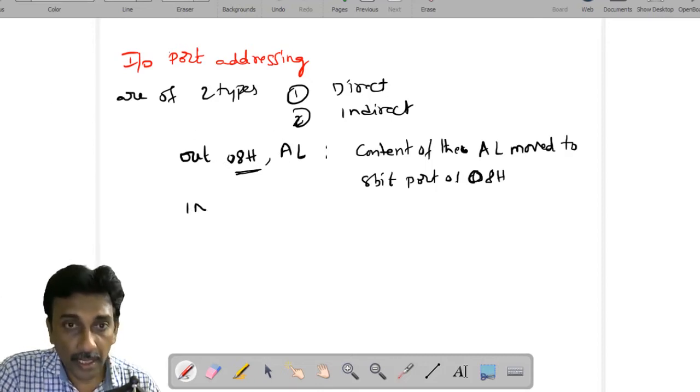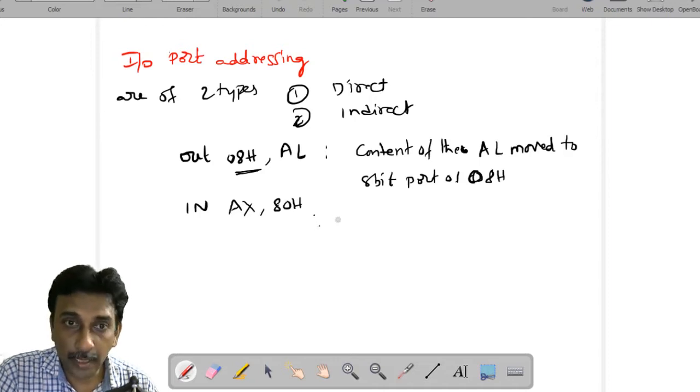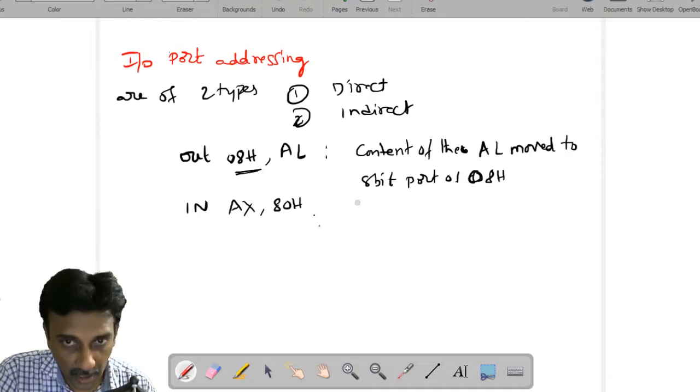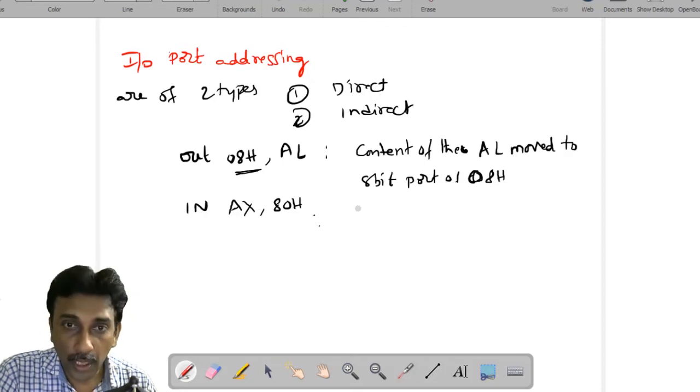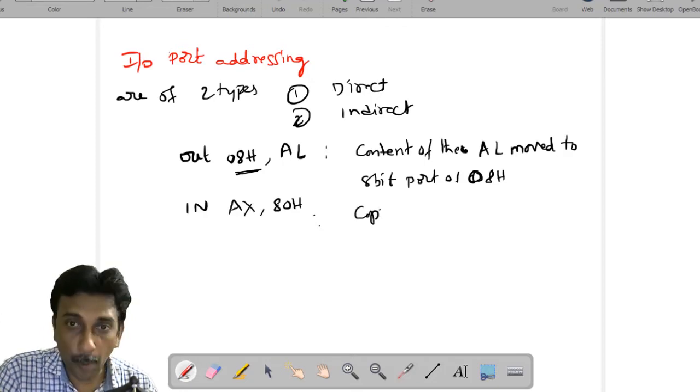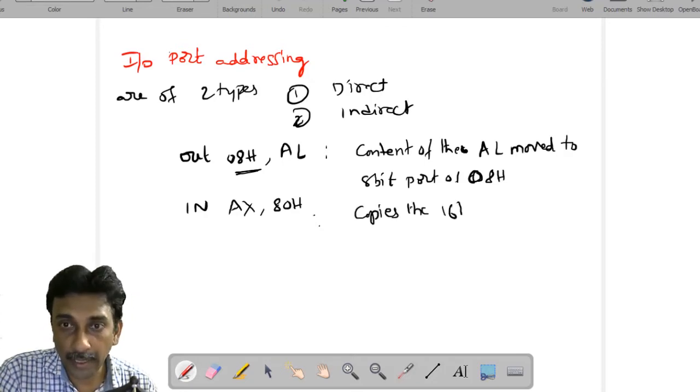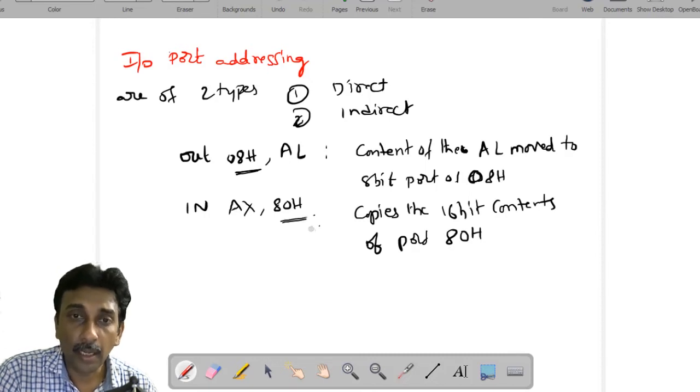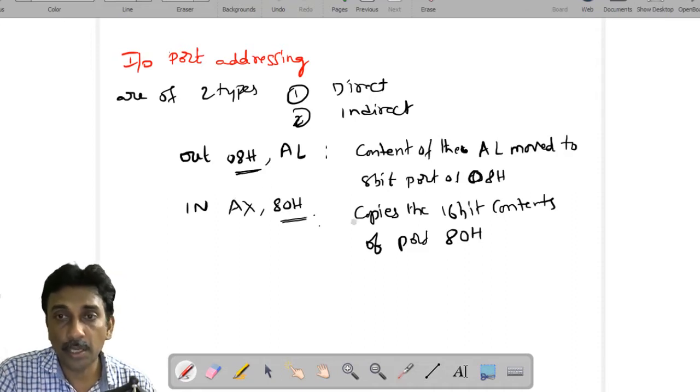Similar way, you can see IN AX, ATH. So this is IN, means that it is coming to the processor. Coming to the processor through the AT port here. So copies the 16-bit contents - it copies the 16-bit contents of port ATH. So there is some value, there is some data which is carrying by the ATH address. That data will be moved, coming into the AX register.